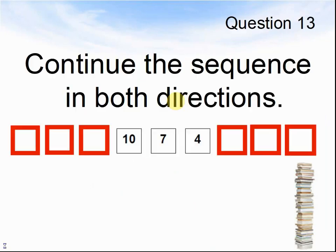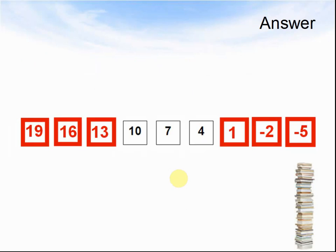Let's look at the next question. Question 13. Continue the sequence in both directions. 10, 7, 4. What are the 6 missing numbers? Pause the video until you are ready to look at the answers. Here come the answers. The answers were, it goes up in 3: 10 to 13, to 16, to 19, and it goes down in 3: 4, 1, minus 2, minus 5.